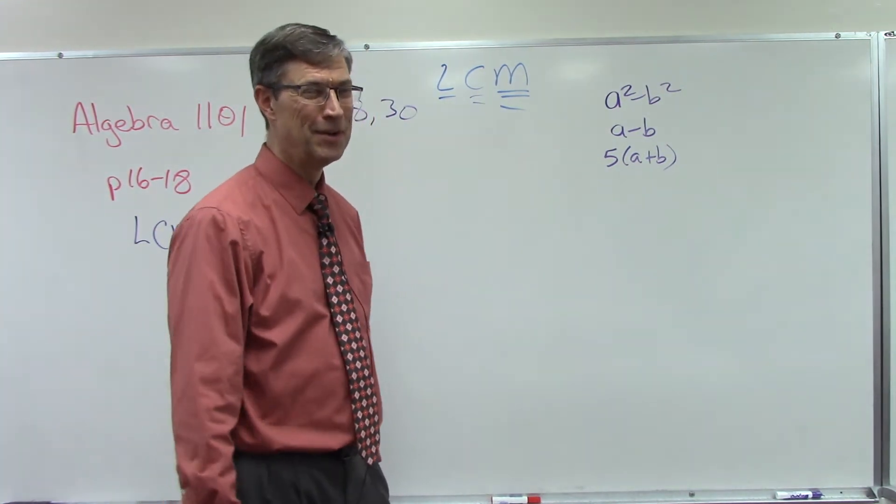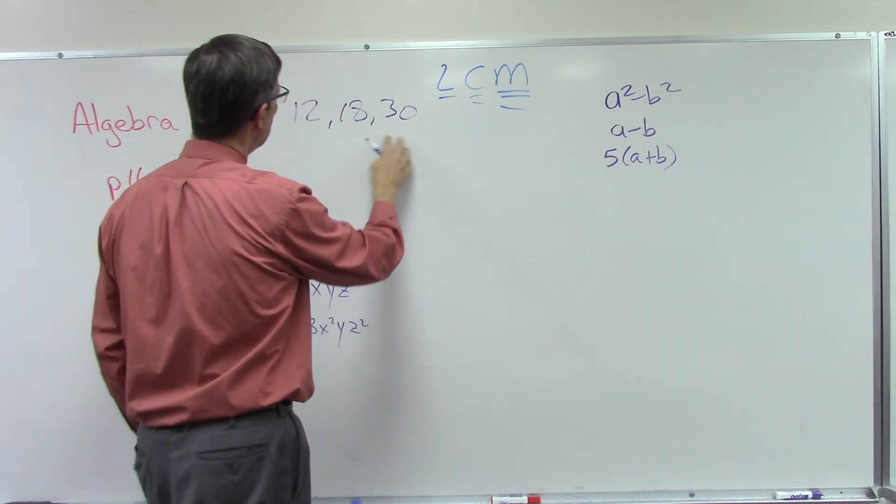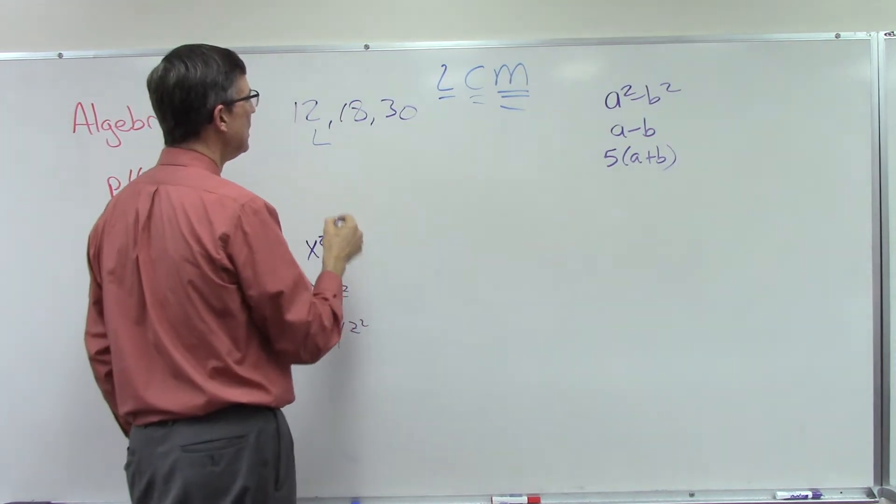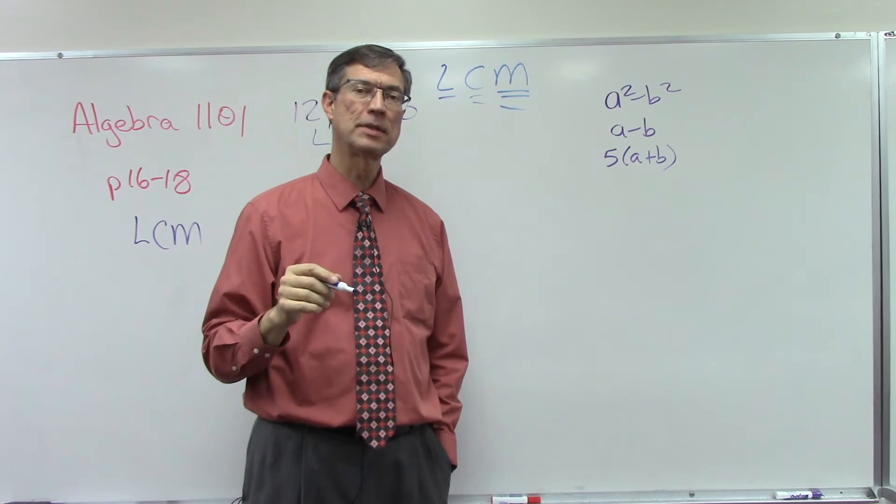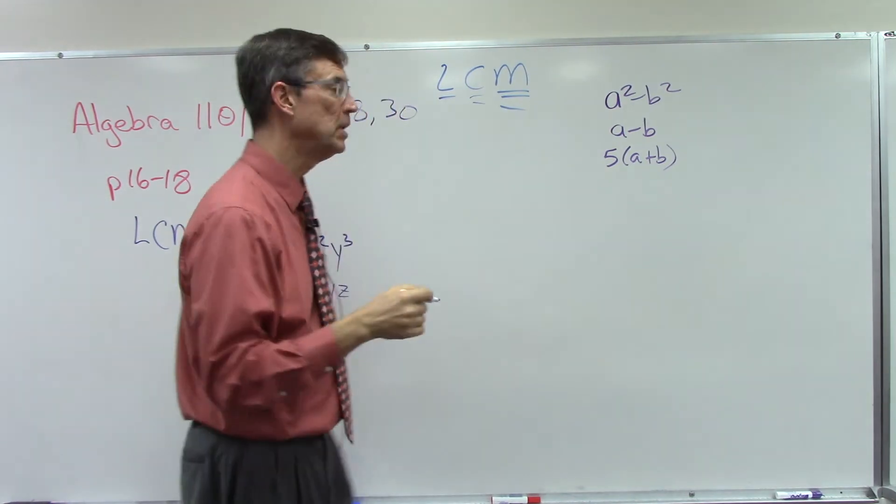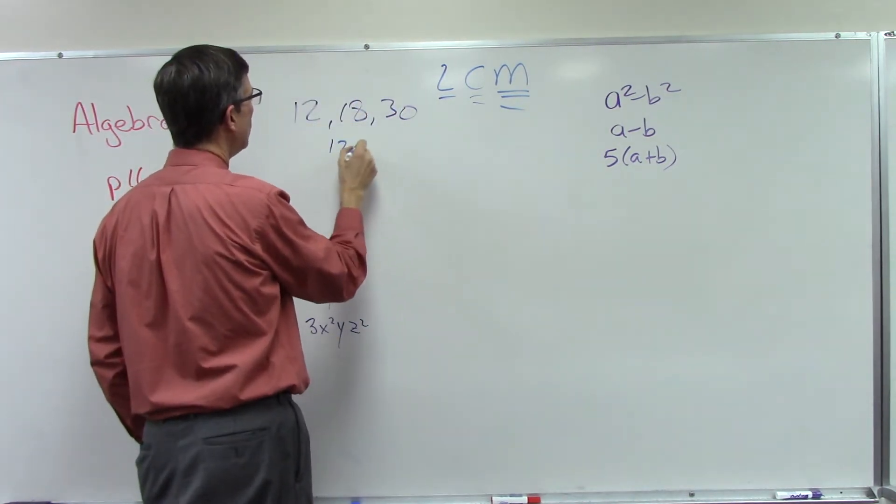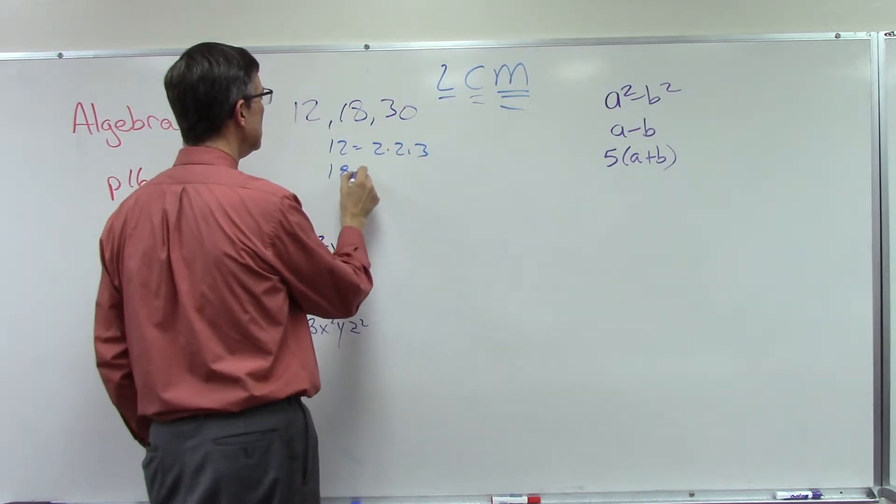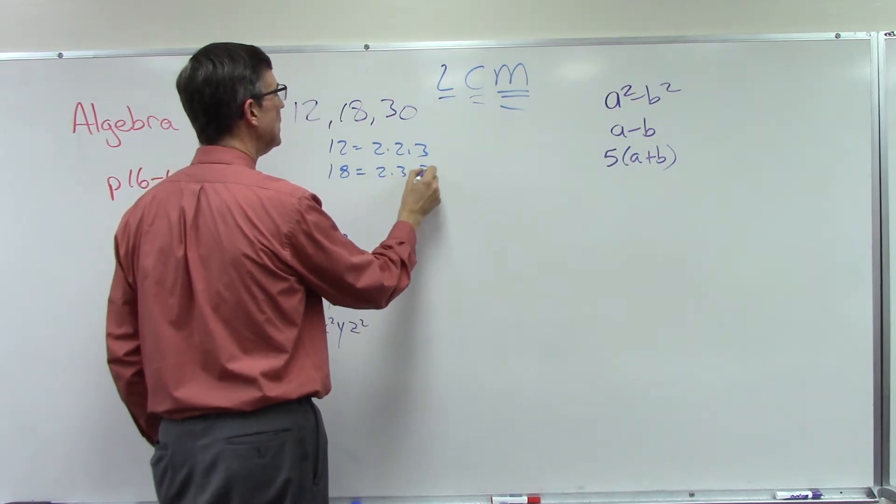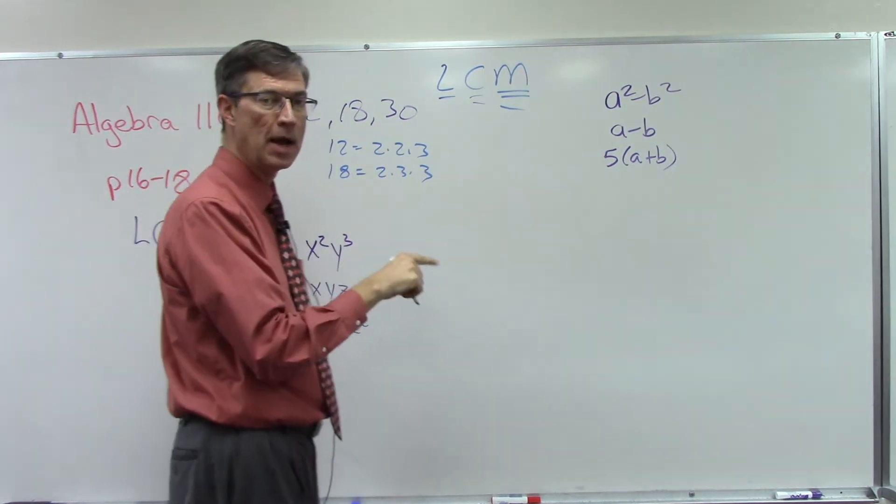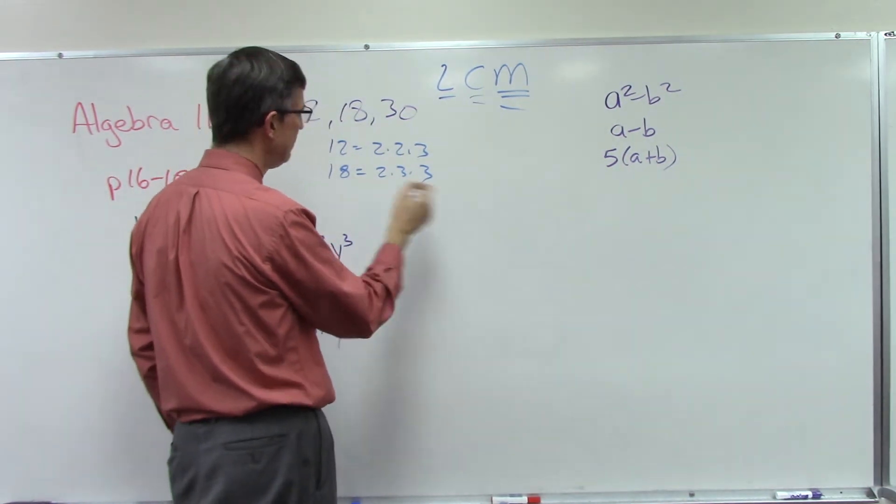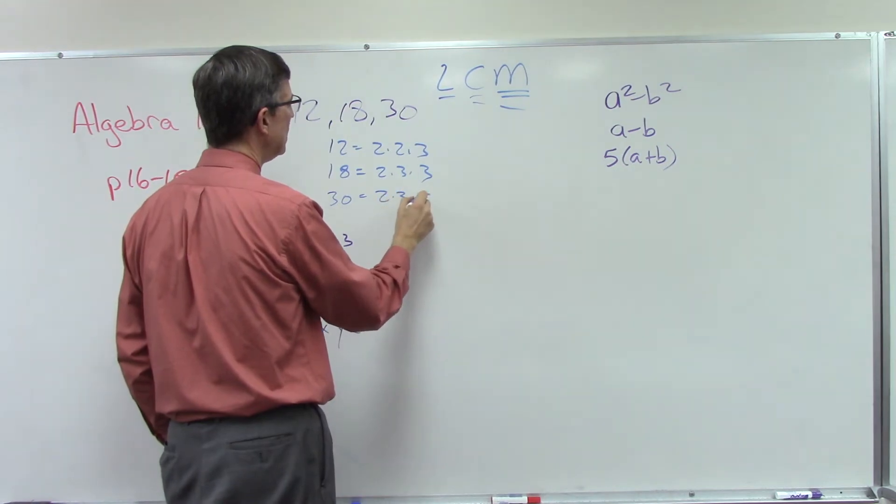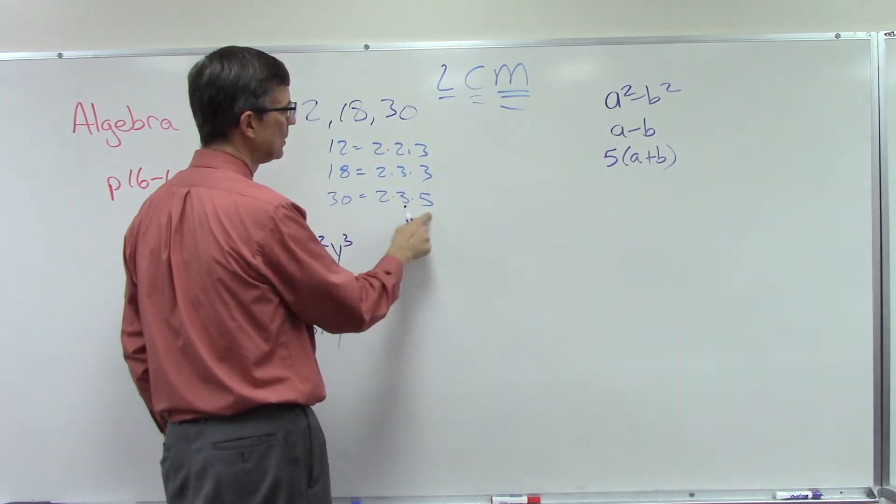Let me show you a shortcut for doing that with numbers. Let's take the number 12. What are all the prime numbers that make that up? If you broke it down, you'd have 2 times 6, and 6 is 2 times 3. So 12 is 2 times 2 times 3. 18 is 2 times 3 times 3, because 3 times 3 is 9. 30 is 2 times 3 times 5, which is 6 times 5.